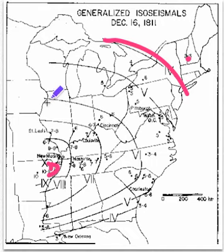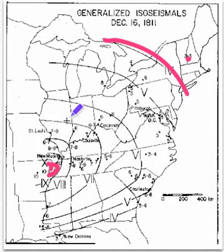One thing to notice from this map is that there weren't a lot of people west of the Mississippi, so all the rings kind of die out at the Mississippi. That's the best we can do.